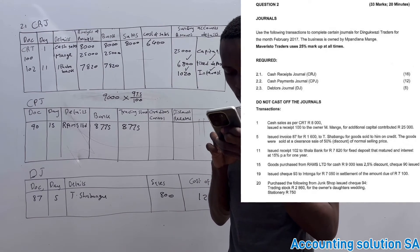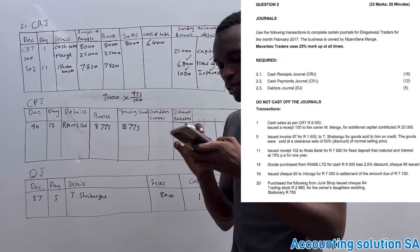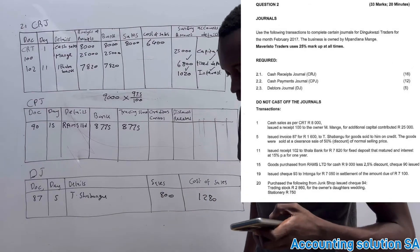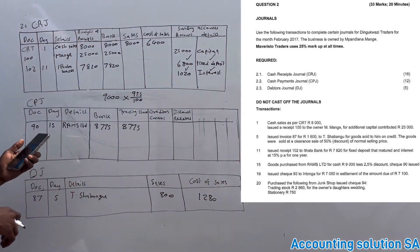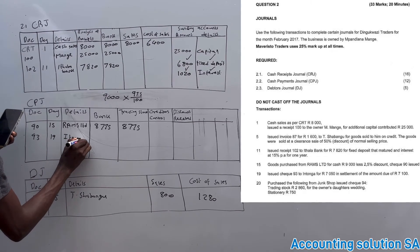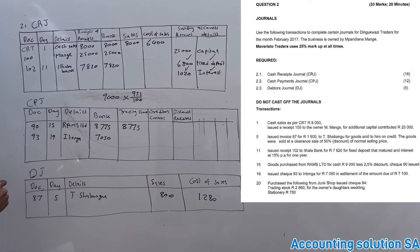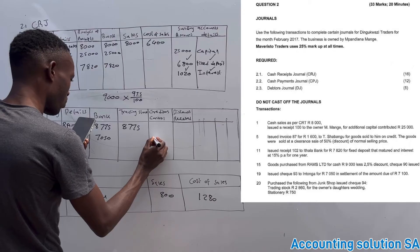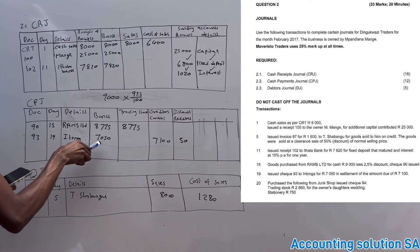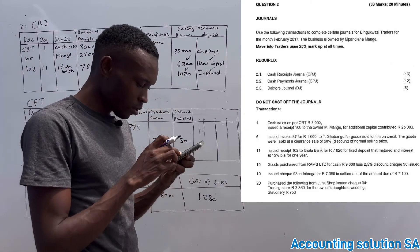Number 19: cheque to E. Tlonger of 7,050. Settlement amount due was 7,100. In other words, we are paying a debt of 7,100 but we paid 7,050, which means 50 rand difference is a discount. Check number 93, on the 19th, to E. Tlonger. Amount under bank is 7,050. Under creditors control we indicate the full amount of 7,100. Discount received is 50 rand — the difference between 7,050 and 7,100.